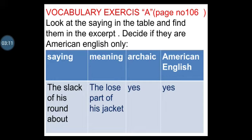Then vocabulary Exercise A from page number one hundred and six. You have to make four columns for the same meanings — British or American English.